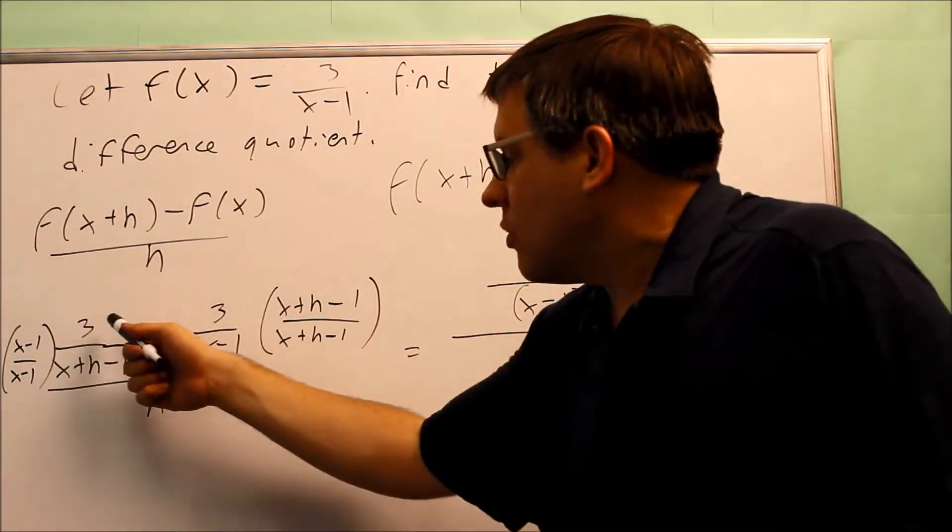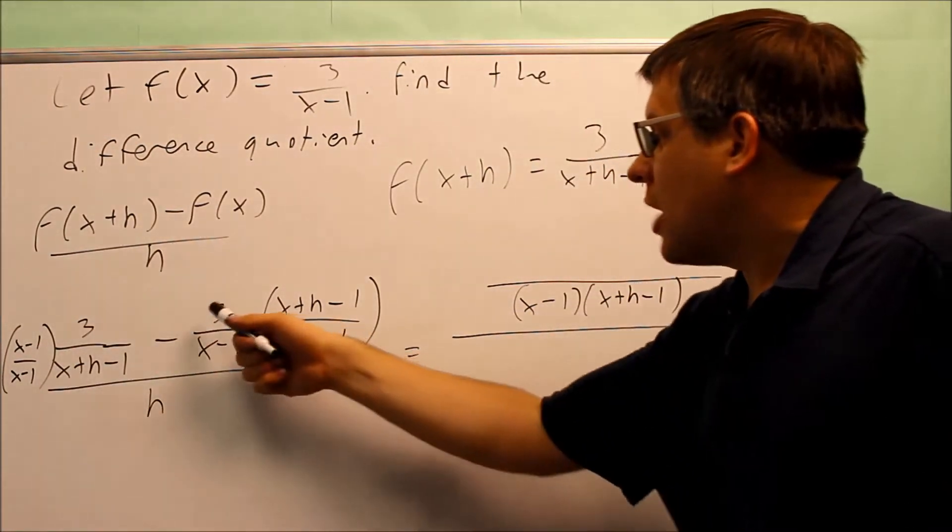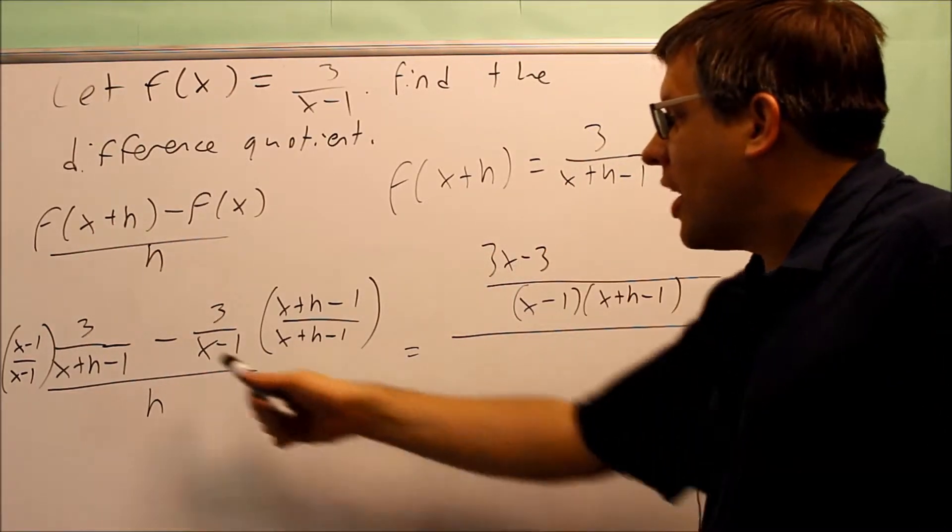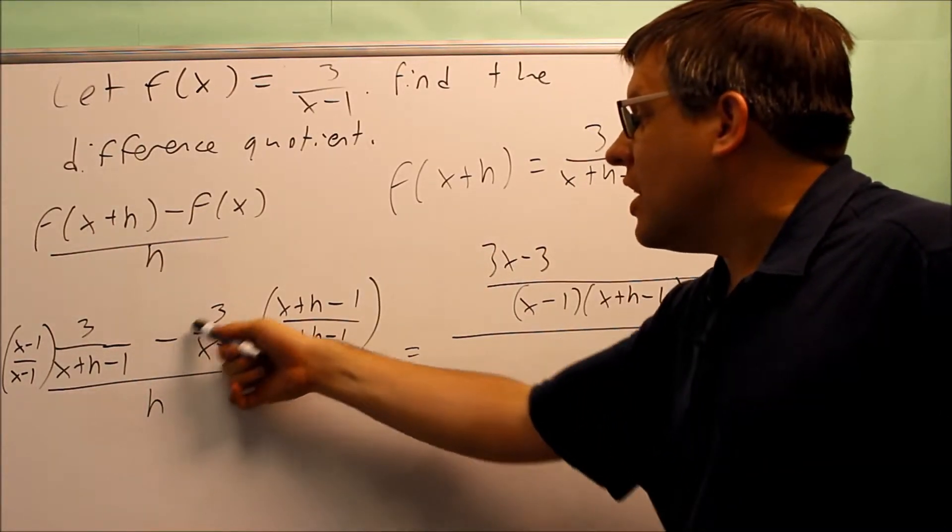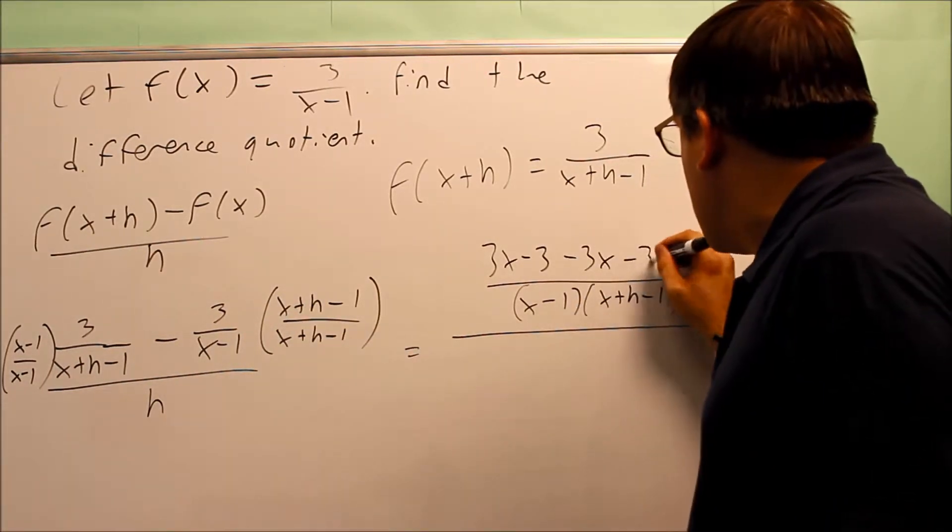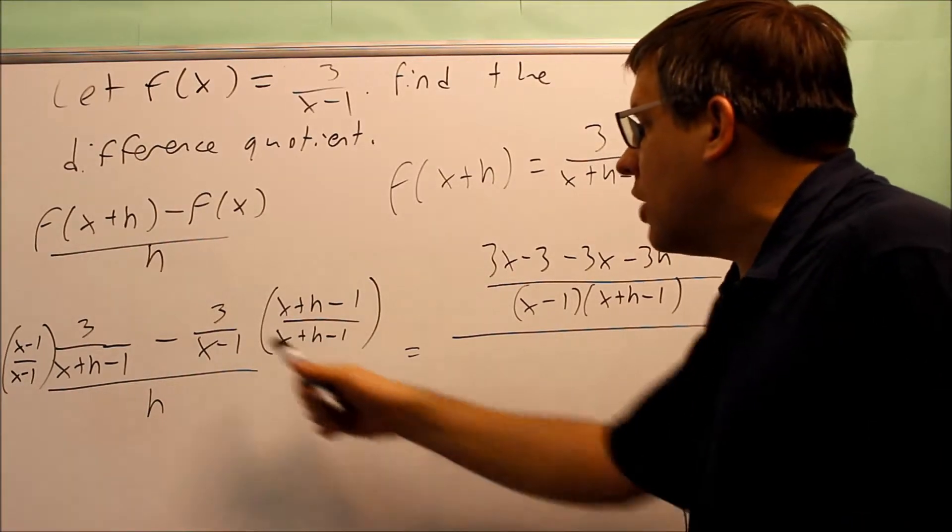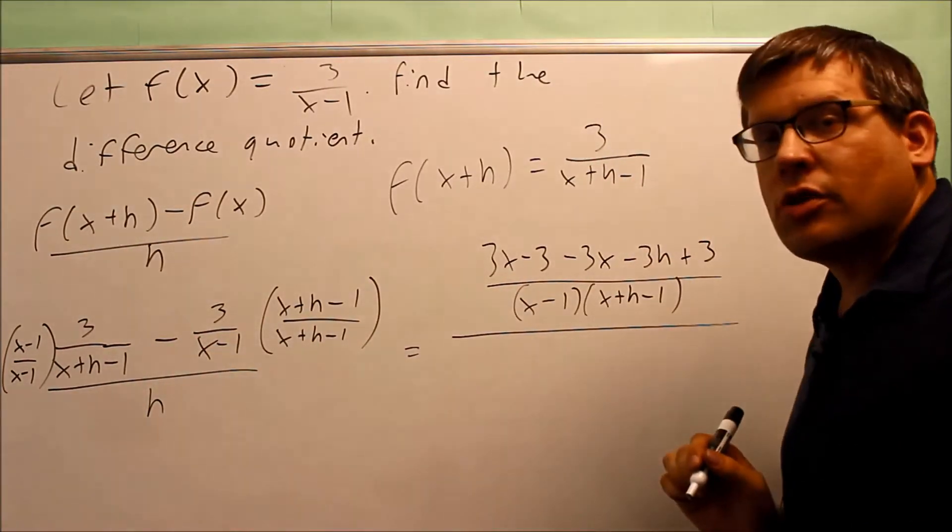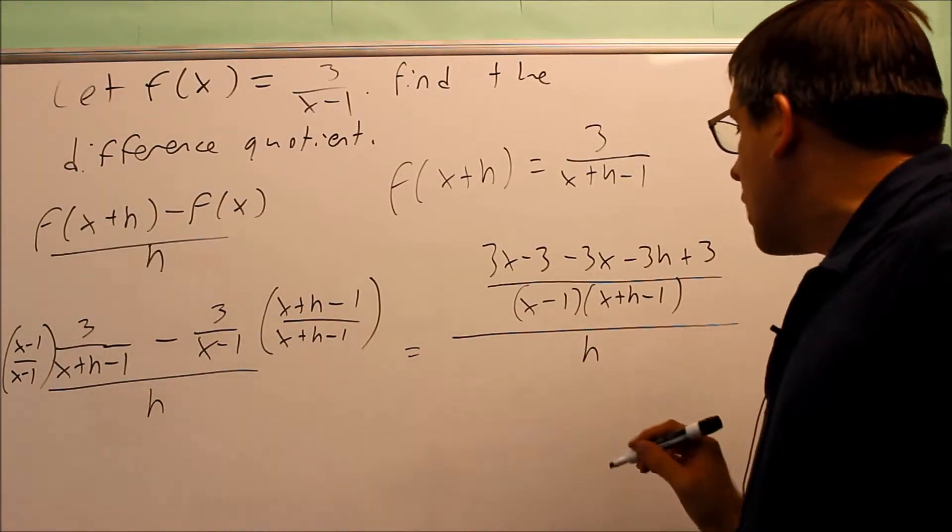x minus 1 times x plus h minus 1. I have that all on the bottom there. Now when I get this, I'm going to multiply across the top for each of those. 3x minus 3 I get. Now this one is really negative 3 times all this here. So I get negative 3x minus 3h, and then negative 3 and negative 1 multiply those and you get plus 3. I still have an h on the bottom.